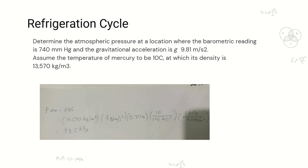So the formula is P-atmospheric equals ρgh. For density we have 13,570, for gravity we have 9.81, for h we have 0.74 m. So let's solve.